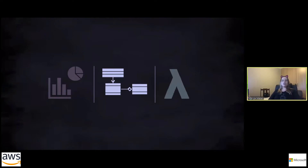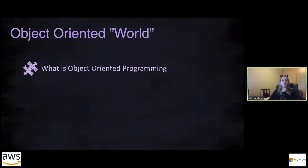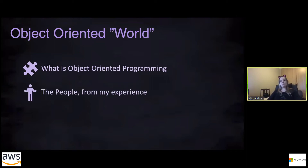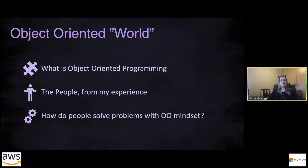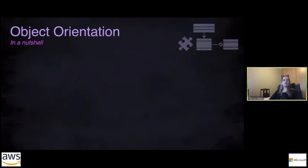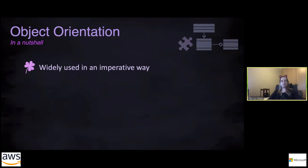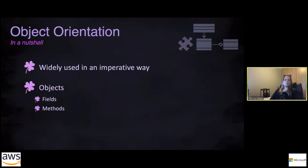Let's dig into object orientation. I'm going to describe this world covering what OOP is, what the people are like, and how you solve a problem with an OO mindset. In a nutshell: it's widely used in an imperative way, you describe your data in terms of objects, these objects have fields and methods, and those methods typically mutate some kind of state. Mutation is a thing in OO.